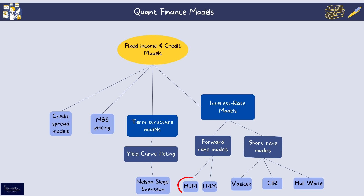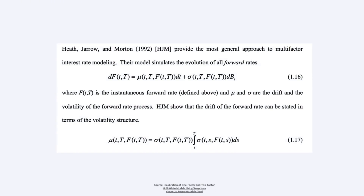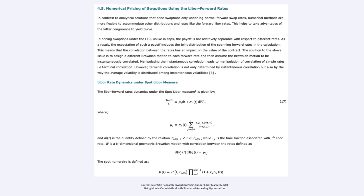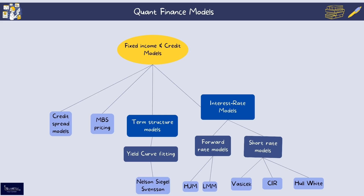Forward rate models model the entire forward rate curve rather than the short rate. The HJM (Heath-Jarrow-Morton) framework focuses on the stochastic evolution of forward rates, ensuring no-arbitrage by linking drift and volatility — it directly models the forward rate curve and allows consistent modeling of the entire yield curve over time. The LMM (LIBOR Market Model), also known as the BGM model, models the evolution of forward LIBOR rates, ensuring consistency with the initial term structure, and is used for pricing caps and swaptions. Its advantage is that it directly uses observable market rates.